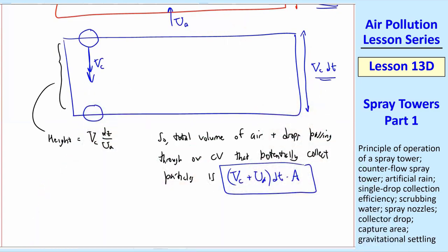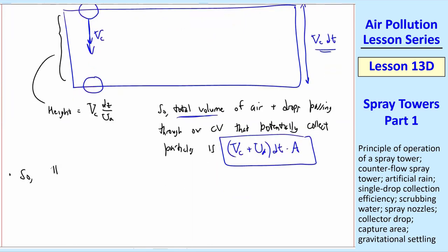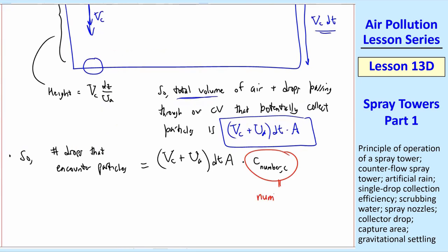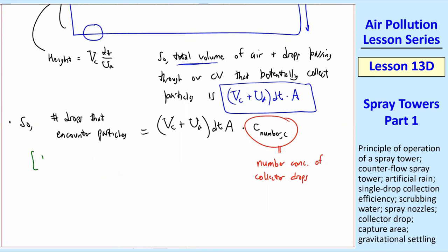The drops are falling in the opposite direction of the air. We're talking about the total volume. So the number of drops that encounter particles is equal to this volume times C number comma C. This is the number concentration of collector drops. Well, once again, we know that dt is equal to dz over UA. So we'll plug that in here.